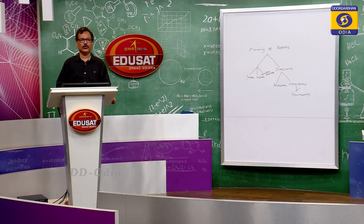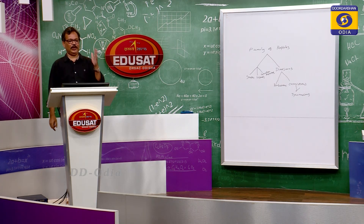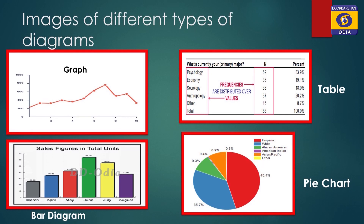Now I am showing you different kinds of diagrams. On the top left-hand side there is a line graph, on the top right-hand side there is a table, just below the graph there is a bar diagram, and on the right-hand side below the table there is another graph. By drawing diagrams we show facts and information, and with those facts learning becomes complete, concrete and comprehensive.